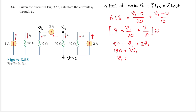So we have 180 divided by 3, which gives V1 equals 60 volts — the units are volts because we used ohms and amperes. Let's highlight this because it is an important value.